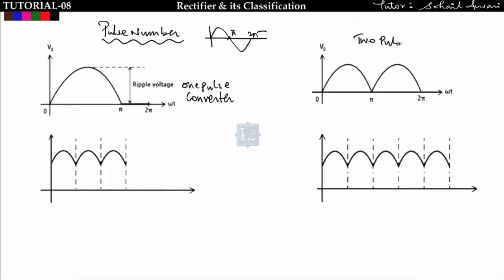There are also two-pulse converters, which give two pulses per cycle. Regarding harmonic analysis, the harmonic content in a one-pulse converter is more than in a two-pulse converter. As the number of pulses increases, the harmonic content decreases. I already derived expressions for form factor and ripple factor in lecture 1 for DC harmonic analysis.